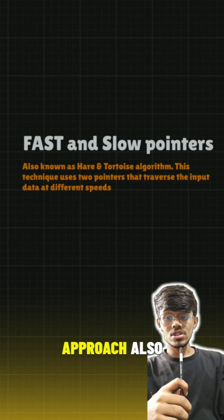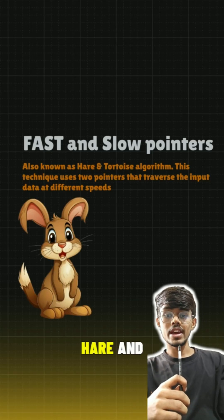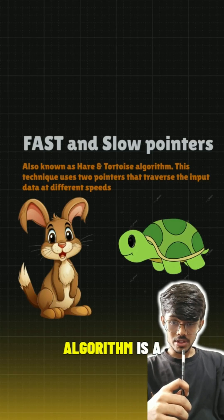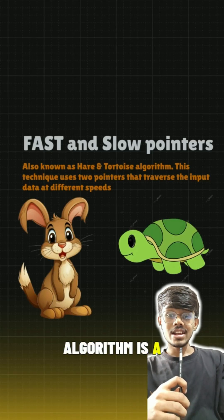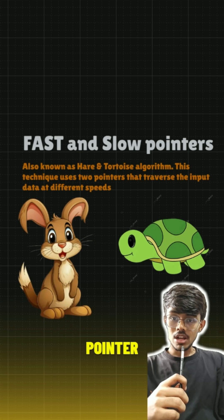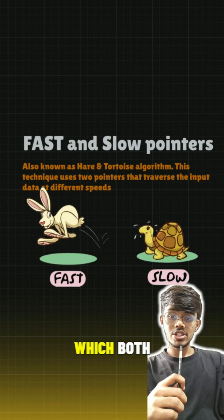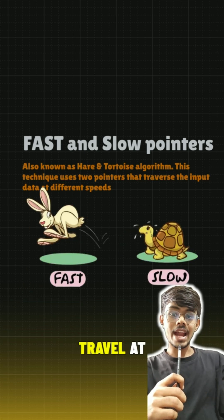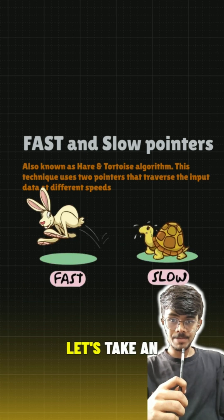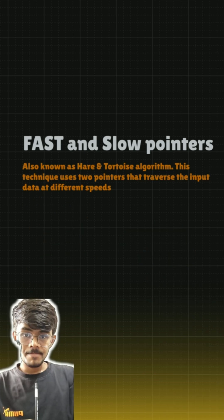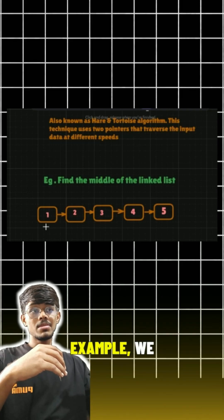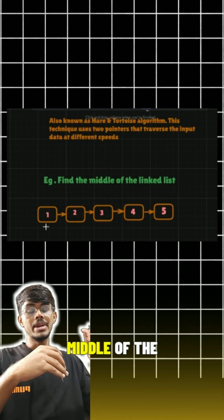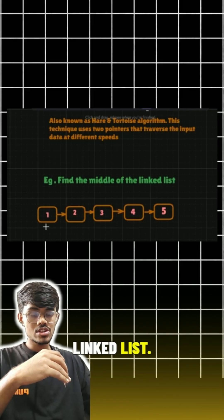The fast and slow pointer approach, also known as the Hare and Tortoise algorithm, is a type of two-pointer approach in which both pointers travel at different speeds. Let's take an example — in this example we have to find the middle of the linked list.